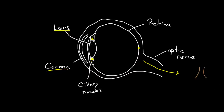The weird thing is, your cornea and inner lens are both convex, so the real image projected onto your retina is actually an upside-down real image. Your optic nerve sends that information to your brain, which flips it over, and you get a clean, right-side-up image of whatever you're looking at.